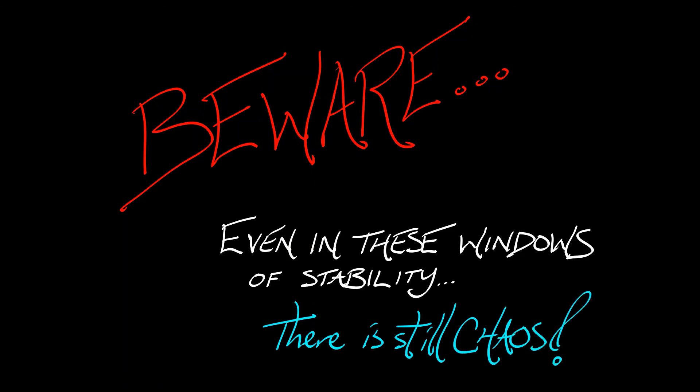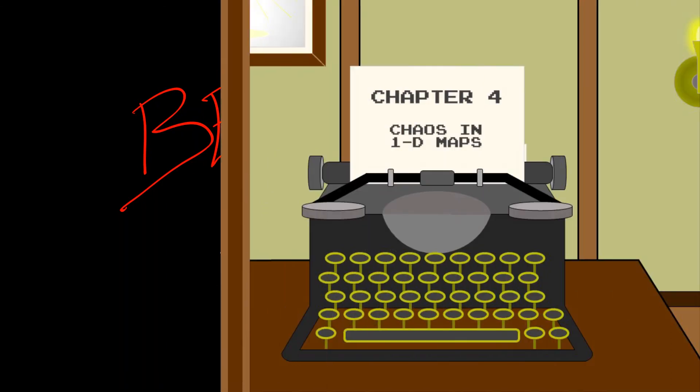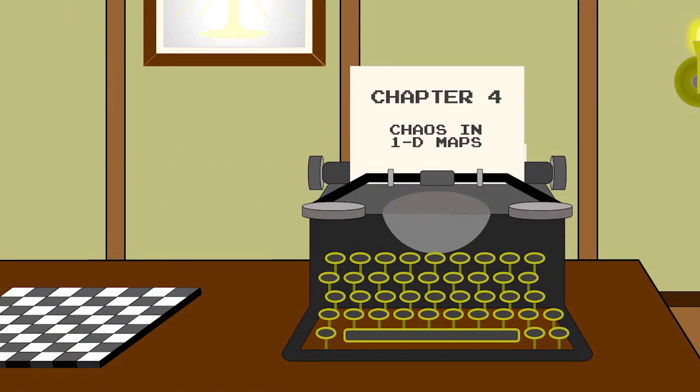There are a lot of other mysteries sitting inside this diagram. Beware and be cautious, because even when the system seems nice — when you've got a stable period-3 orbit — there's still chaotic dynamics inside, but it's hiding. That is not at all obvious, and we have a little bit of unpacking to do in order to understand that phenomenon.